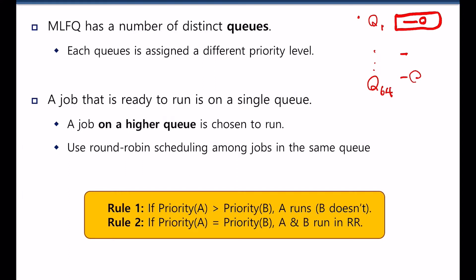There are a few rules you need to remember in MLFQ. If priority A is greater than priority B, then A runs. If the two processes have the same priority, then A and B run in round-robin. So for the jobs on the same queue, they have the same priority.